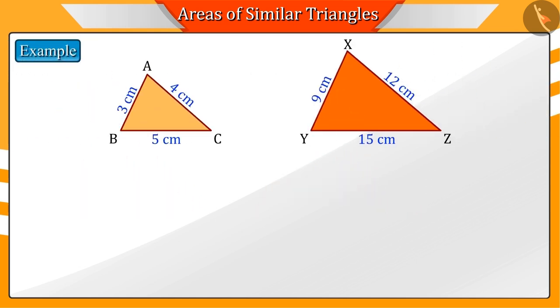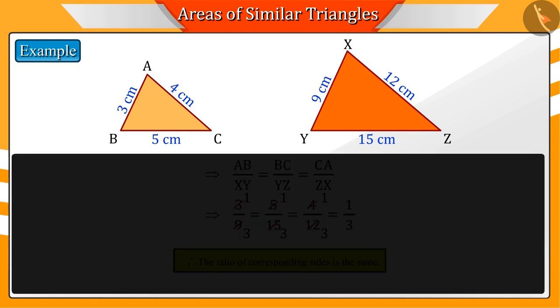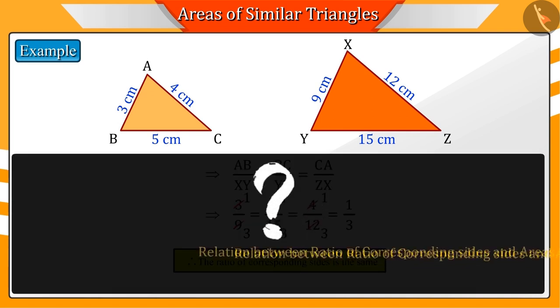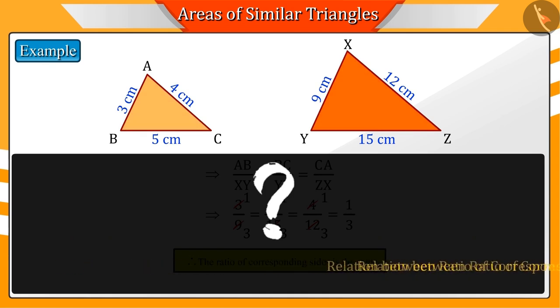What do you understand by observing the given triangles? These are similar triangles because the ratios of their corresponding sides are the same. But can you tell the relation between the ratio of the corresponding sides and the area of the triangle? Let's discuss this.